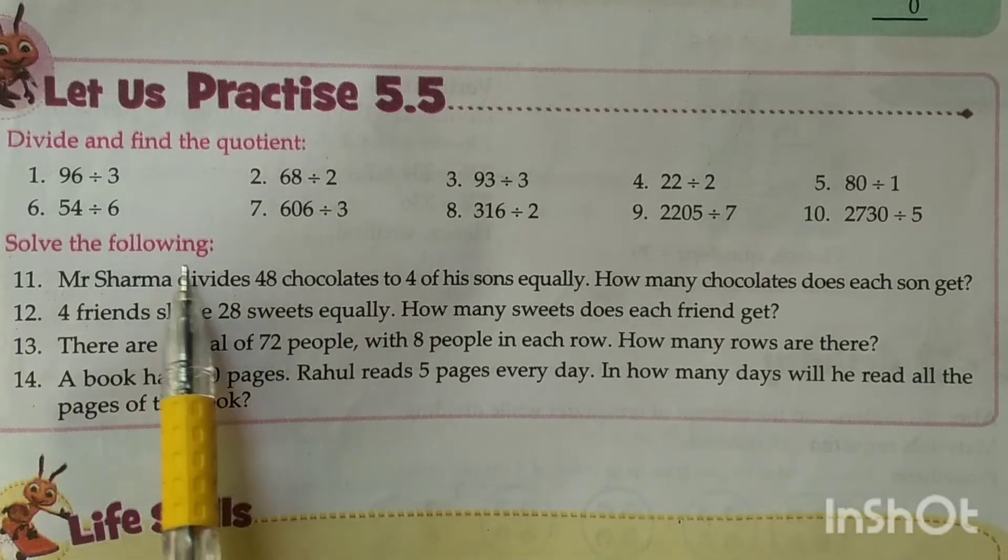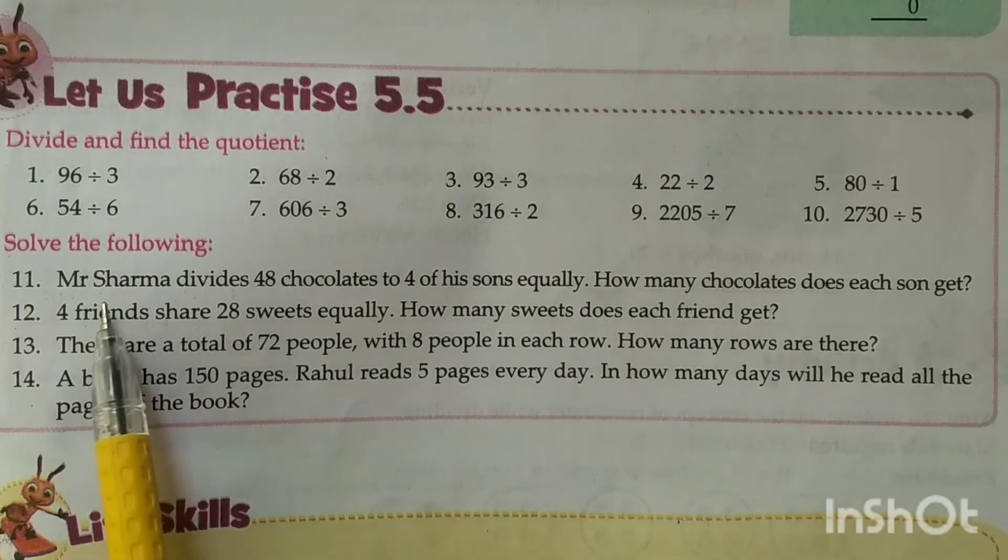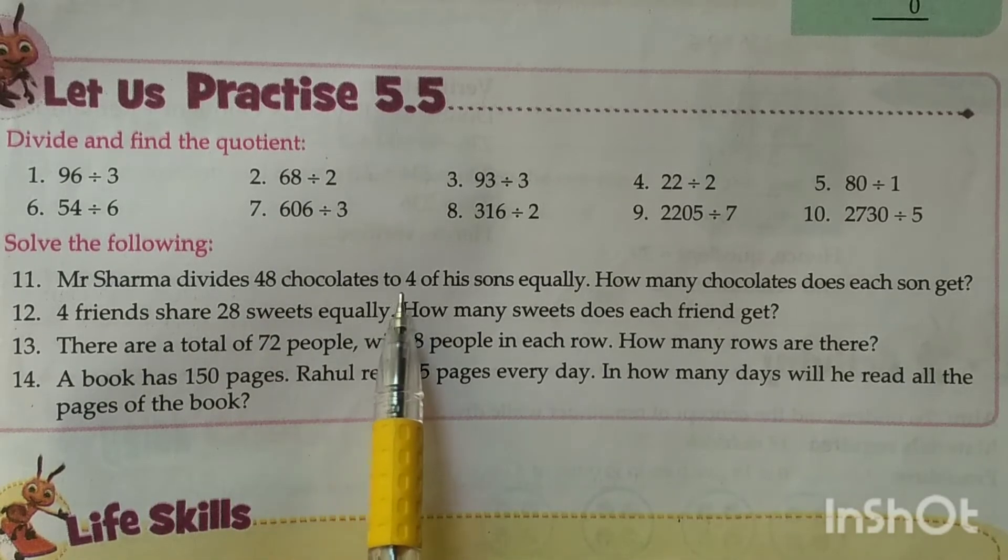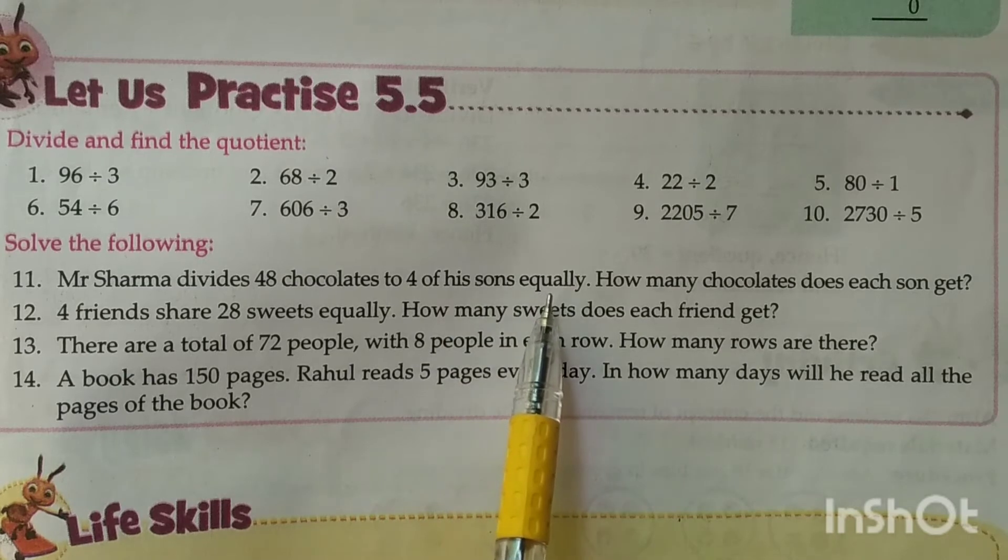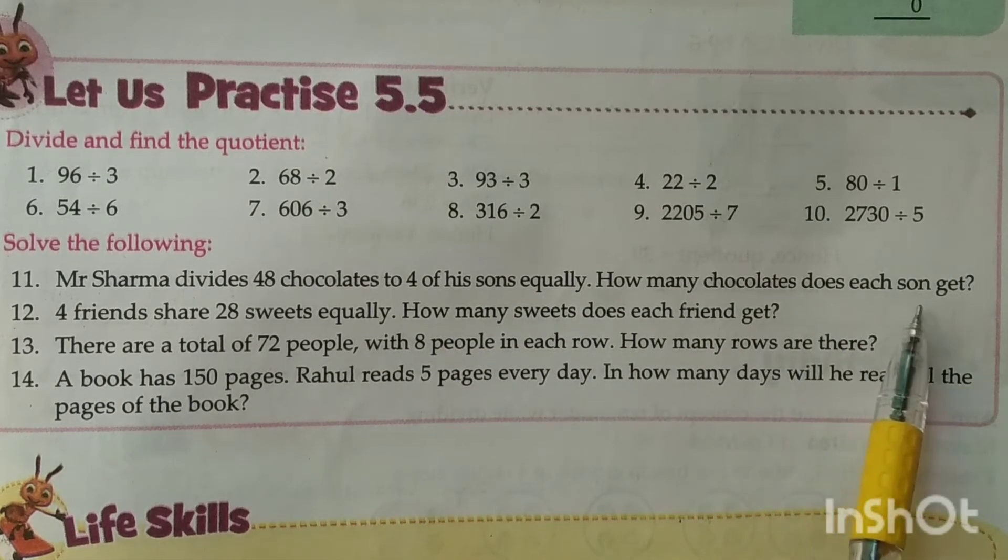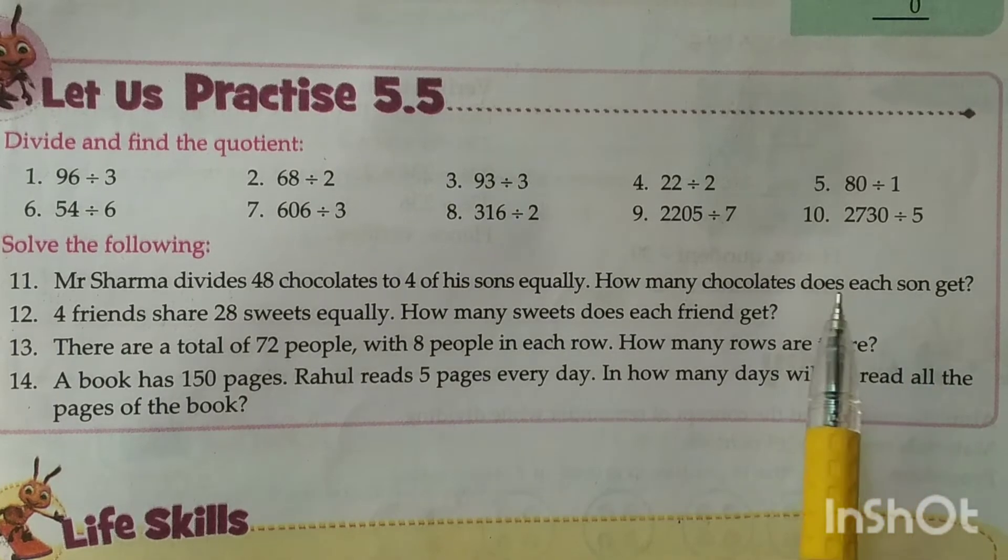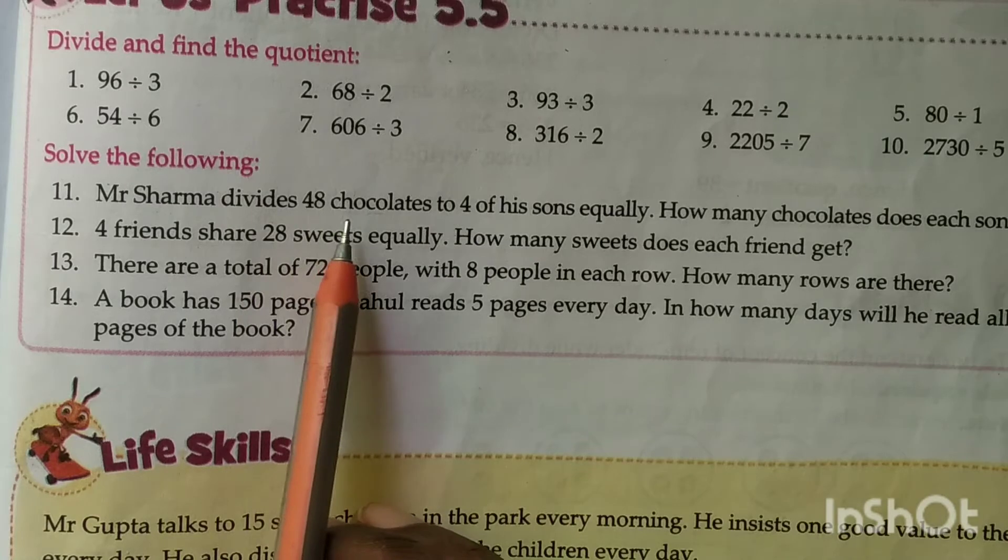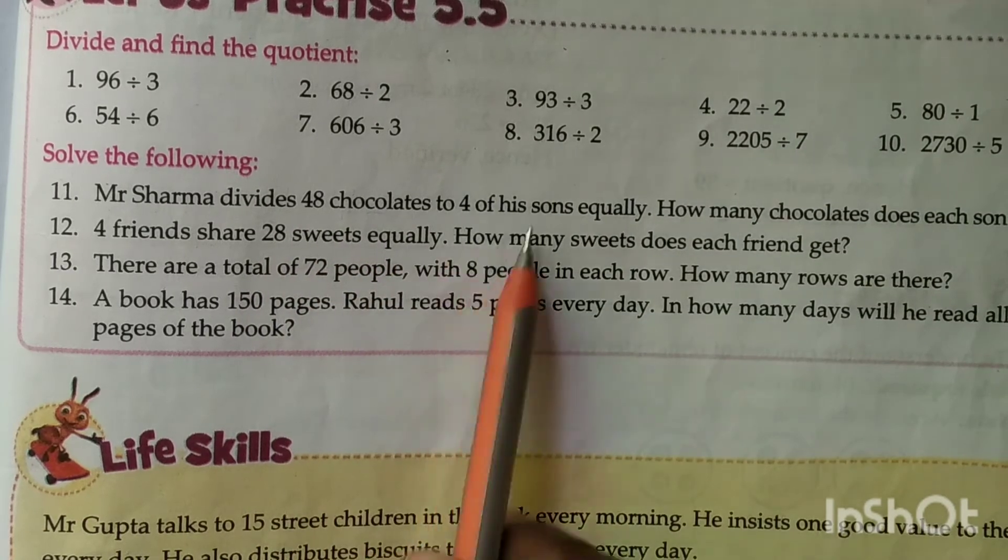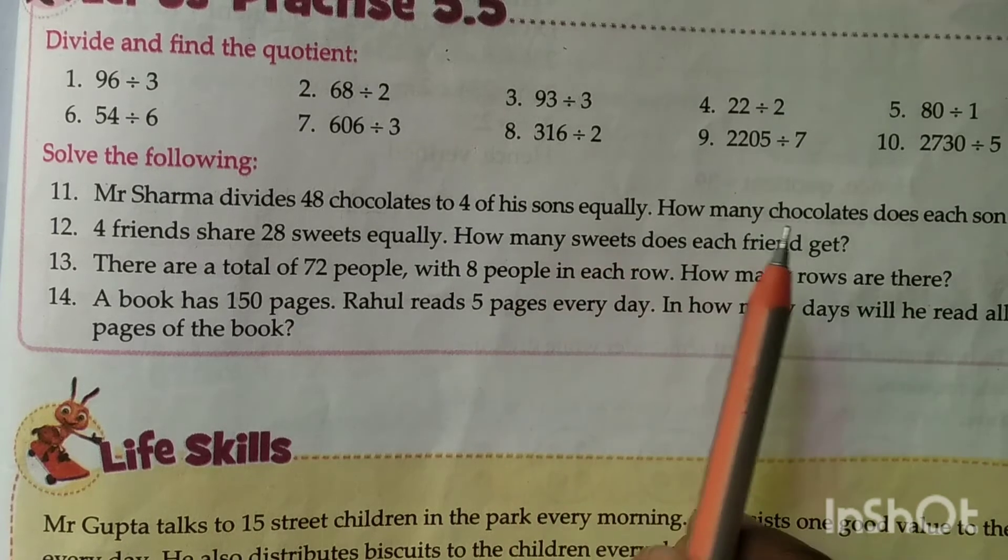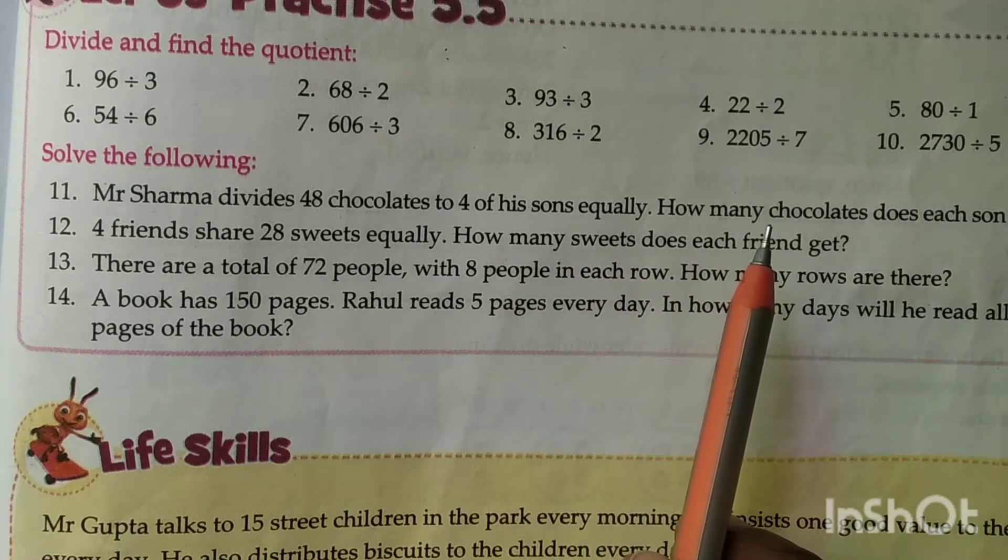Solve the following: Mr. Sharma divides 48 chocolates to 4 of his sons equally. How many chocolates does each son get?